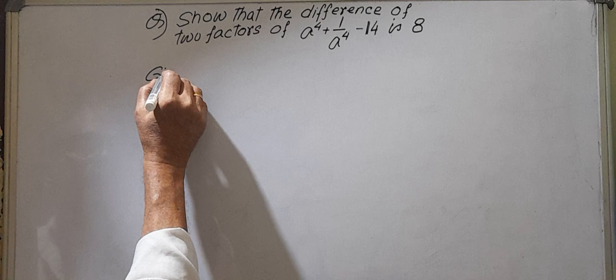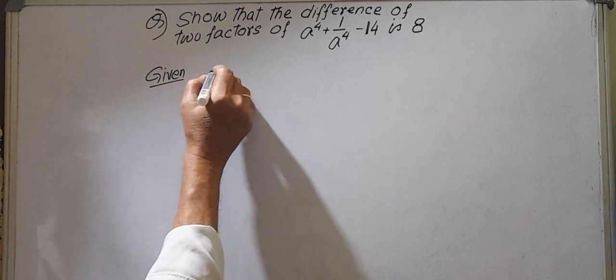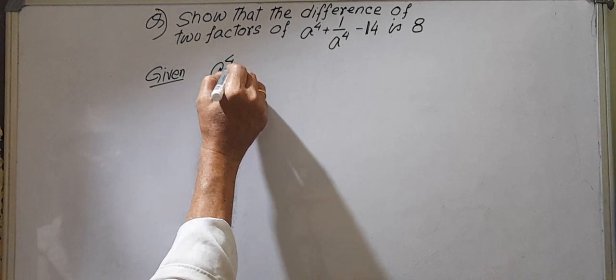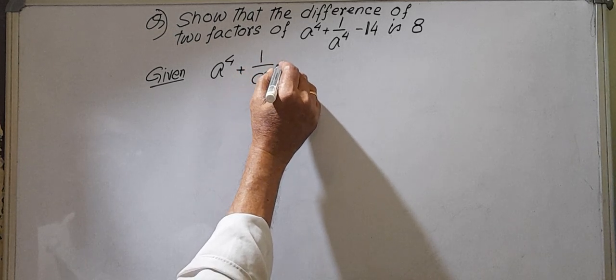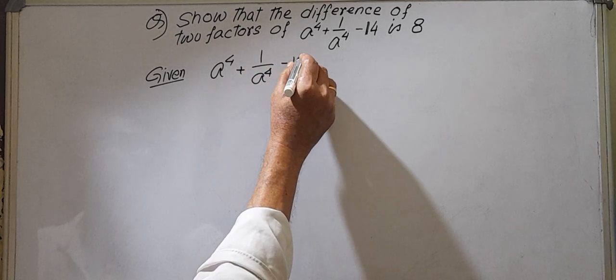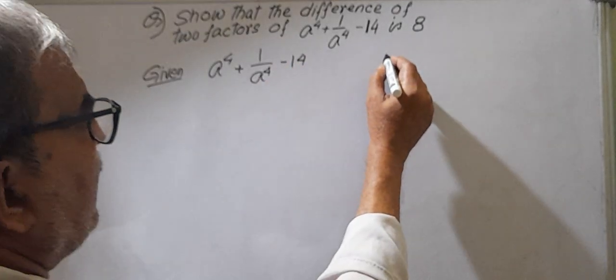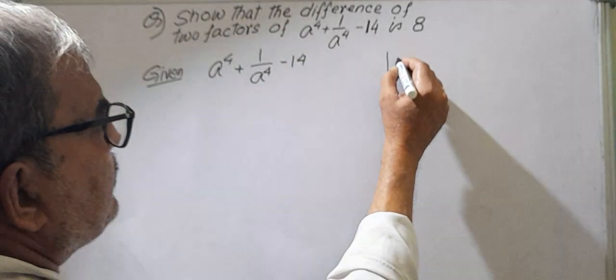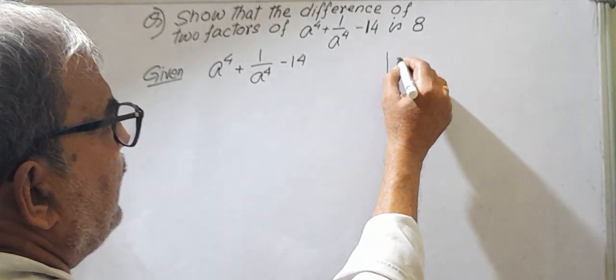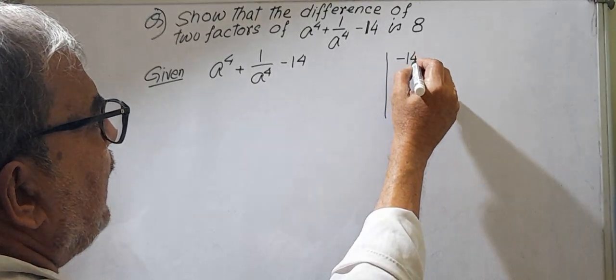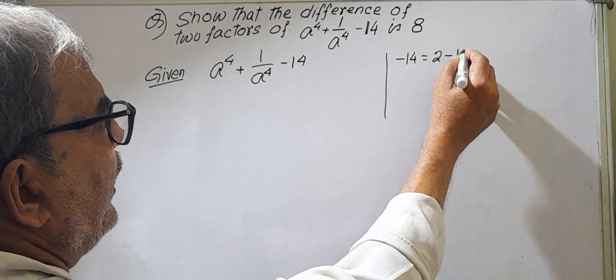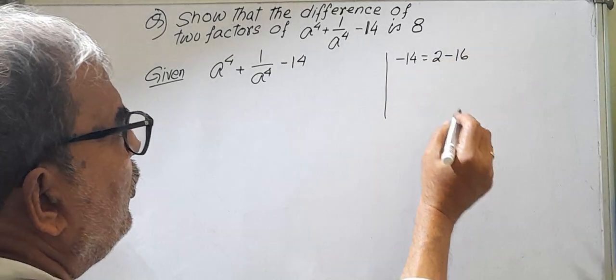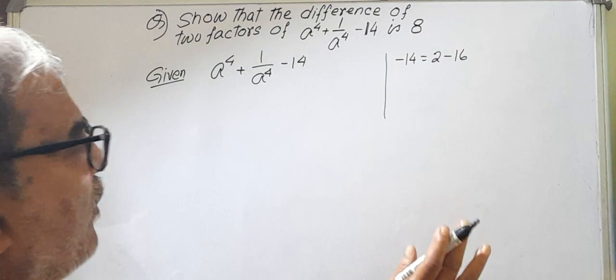Question given: A to the power 4 plus 1 by A to the power 4 minus 14. So minus 14 I can break like this: minus 14 I can write as 2 plus minus 16. Why so? Because 16 is the square of 4.